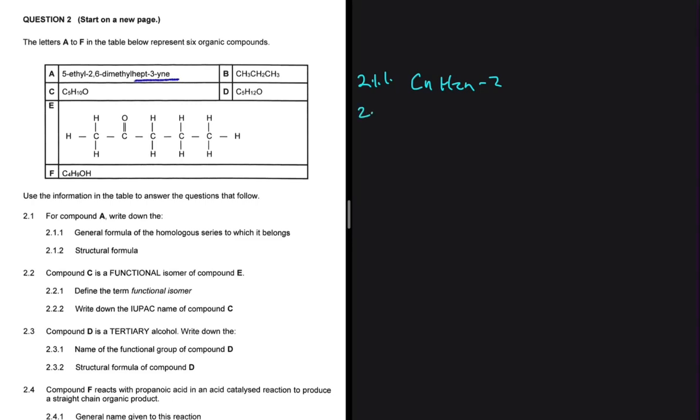And then 2.1.2, we're supposed to draw the structural formula of compound A. So let's start with hept. Hept, we know that we need 7 carbons. So we're going to have 1, 2, 3, 4, 5, 6, 7.